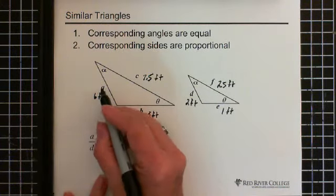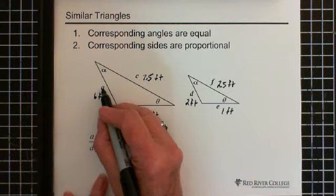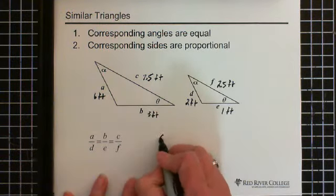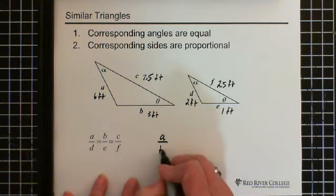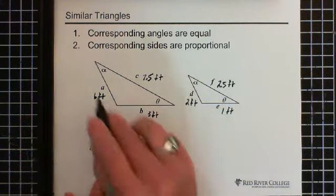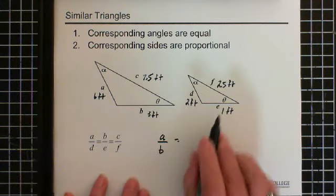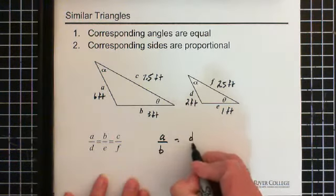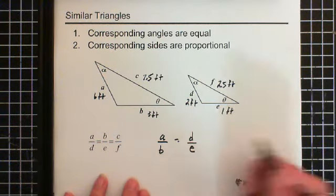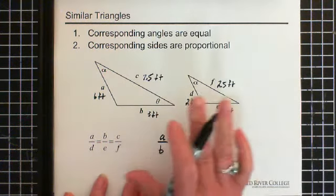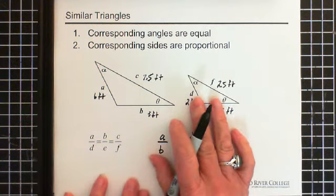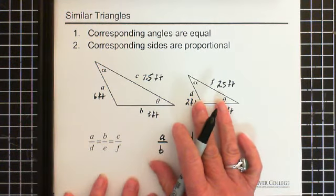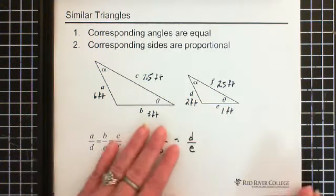We could also say, as we've just talked about, that A with respect to B, so this relationship, A with respect to B, has to equal D with respect to E. And knowing this, knowing that we have similar triangles, we can use that information to solve questions. So let's just walk through one.